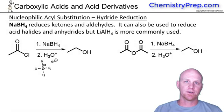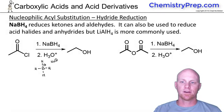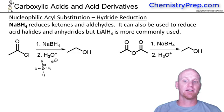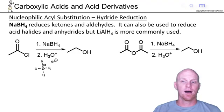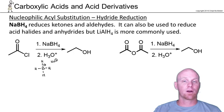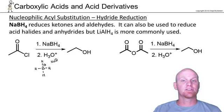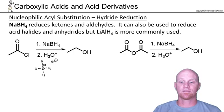Now we want to look at hydride reductions. We looked at hydride reductions for both ketones and aldehydes and how they were reduced to alcohols. We're going to see a similar pattern that we saw with organometallics with our carboxylic acids and derivatives, in that they have the chance to potentially react twice.